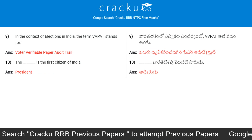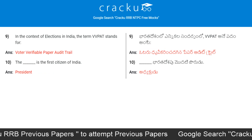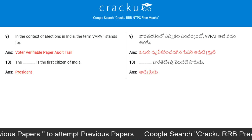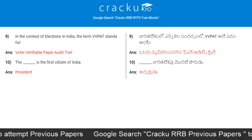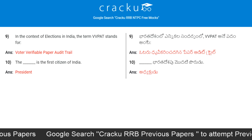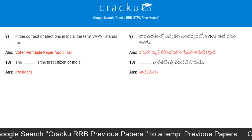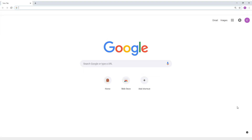In the context of elections in India, the term VVPAT stands for Voter Verifiable Paper Audit Trail. Who is the first citizen of India? The answer is the President. To download RRB NTPC previous papers, go to Google and search Kraku RRB NTPC Previous Papers.